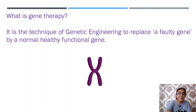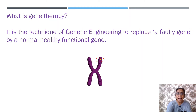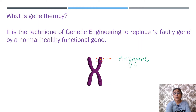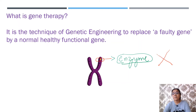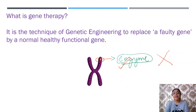Suppose there is a gene located in the chromosome and this gene is a faulty gene. It encodes an enzyme. Since it is faulty, it will encode a faulty enzyme or will not synthesize any enzyme at all. As a result, that particular protein will not be synthesized, leading to a genetic disorder.